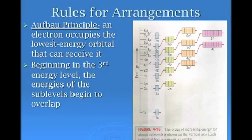Now, rules that we have to have for writing electron configurations. The Aufbau principle, an electron occupies the lowest energy orbital that can receive it. Now beginning in the third energy level, the energies of the sublevel begin to overlap. And we can see that we have the order over here.